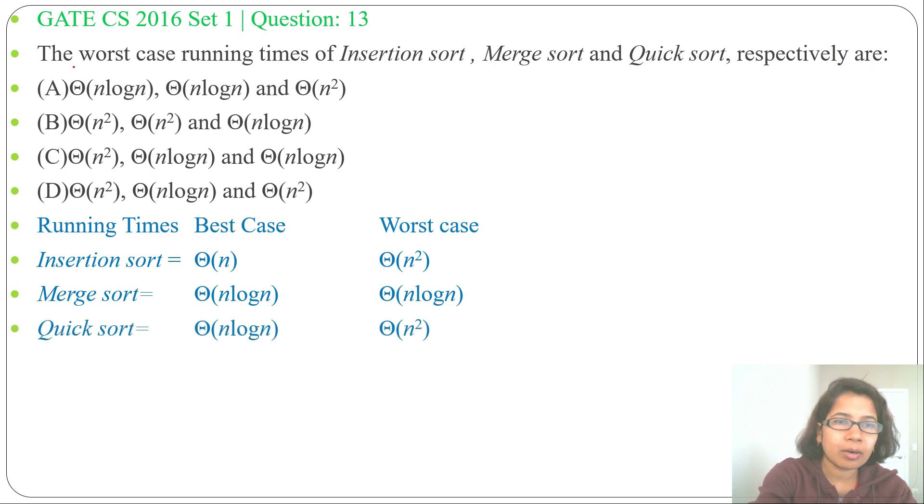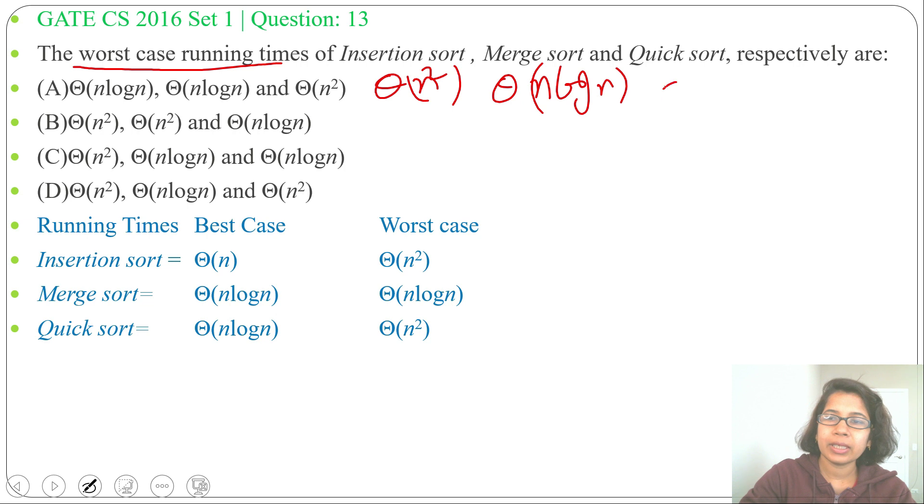The question is about worst case running time. So for insertion sort it is theta of n squared, for merge sort theta of n log n, and for quick sort it is theta of n squared. Now check the options.